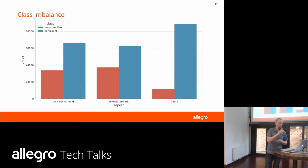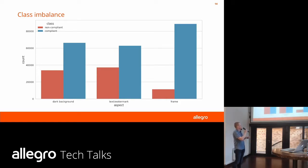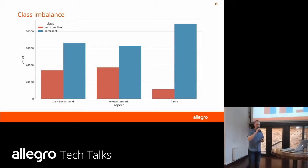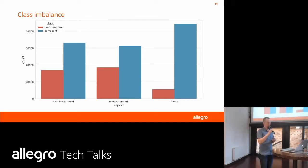The dataset was highly imbalanced. In every aspect, especially the frame aspect on the right, only about 10% of images are non-compliant with the rules. We took that into account at the later stages when training the model.